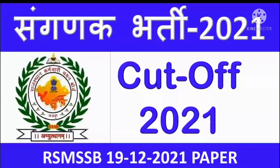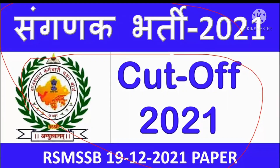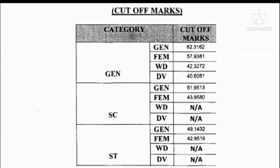I am going to show you the link. Let's start. The first time the Sanganak cut off was 62.531.